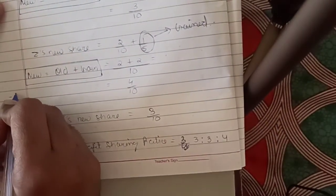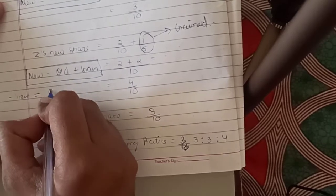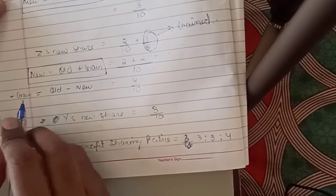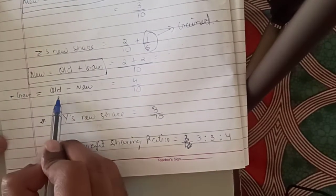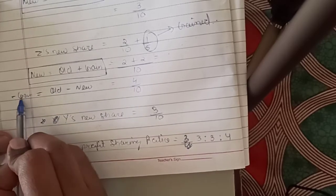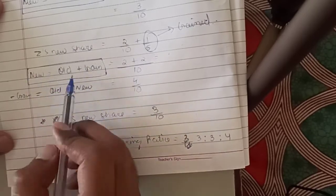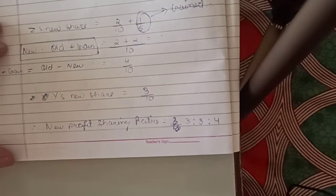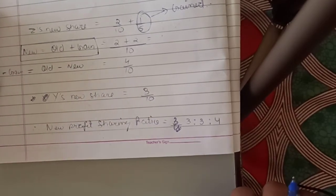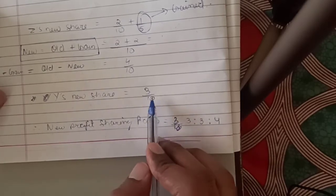Our main formula: gain = old minus new. Since gain is written as negative, minus gain = old minus new, so we transform it: new = old plus gain. Y's share will remain the same at 3/10 because Y has neither given nor taken from anyone.